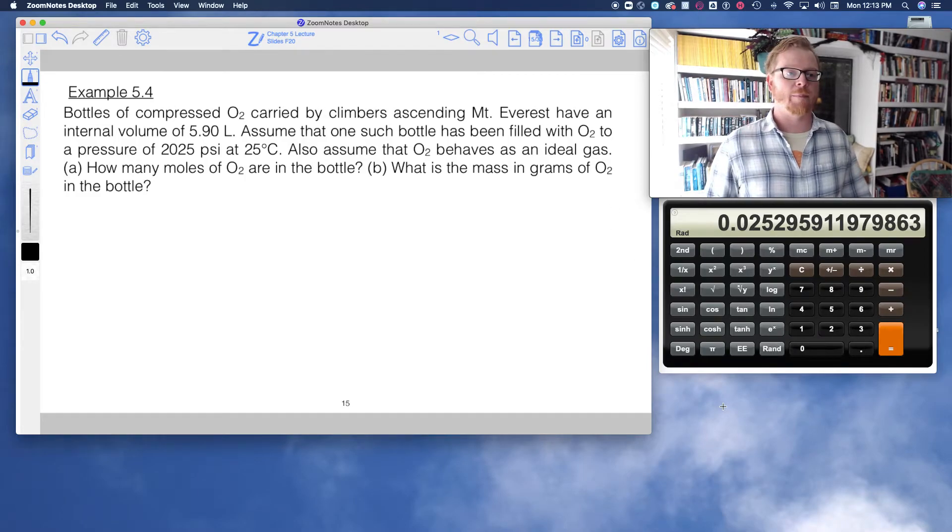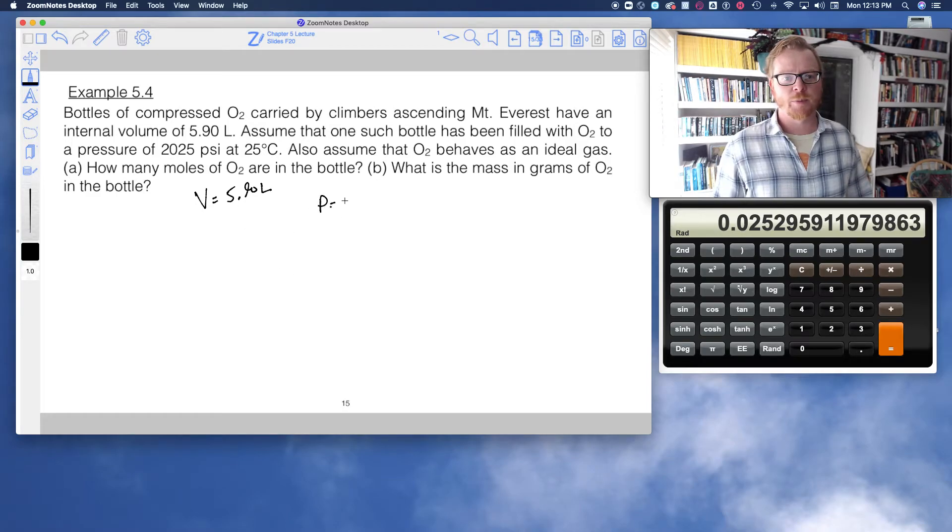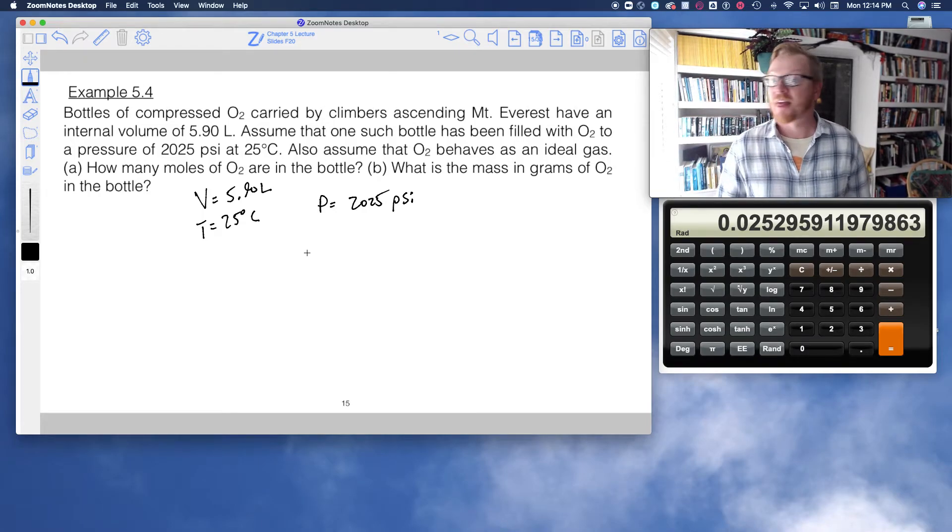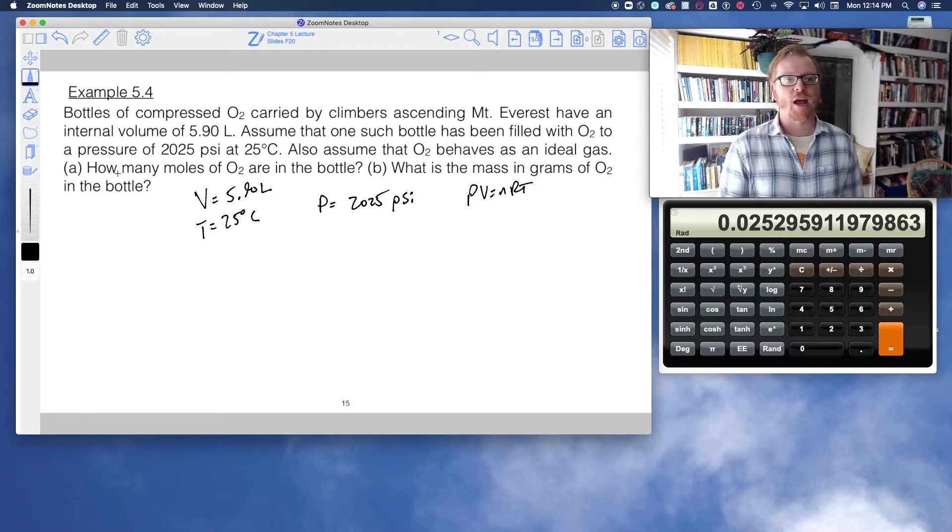So here's a cool calculation we can do with PV equals NRT. So bottles of compressed O2 carried by climbers ascending Mount Everest have an internal volume of 5.9 liters. Assume that one such bottle has been filled with O2 to a pressure of, so P equals 2025 PSI at T equals 25 degrees C. Also assume that O2 behaves as an ideal gas. We're going to talk in the next coming videos what that means. For now, we'll assume all of our gases are ideal. And that ideal gas means I can use PV equals NRT. And so now it says how many moles of O2 are in the bottle? And then what is the mass and grams of O2 in the bottle?